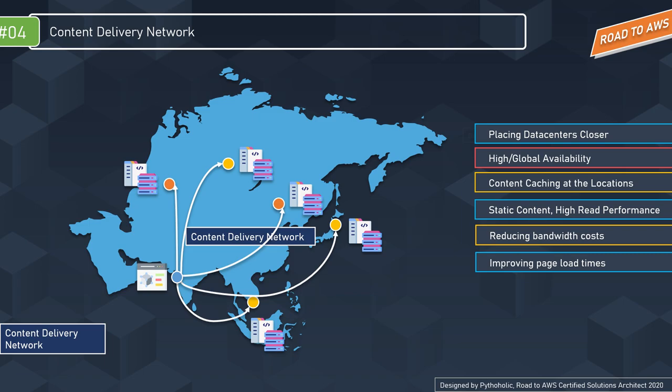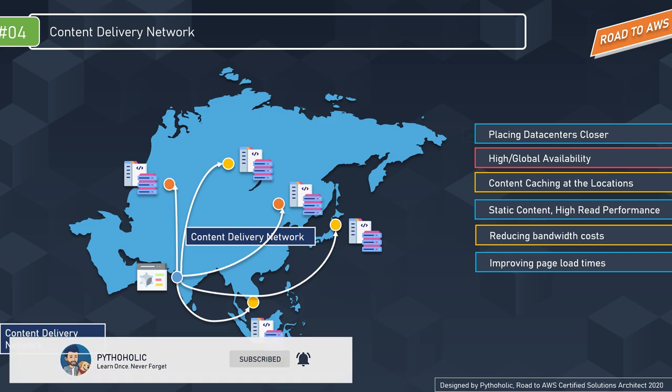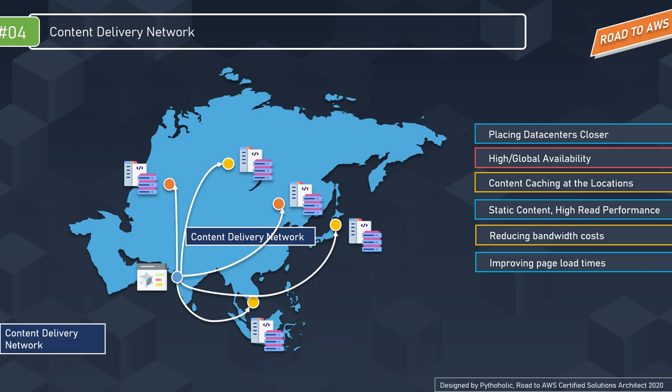The solution is to move towards a content delivery network. A CDN is a geographically distributed network of proxy servers and data centers. The goal is to provide high availability and performance by distributing the service spatially relative to end users. We place proxy servers or data centers closer to our customers, hosting cached static files on those servers.